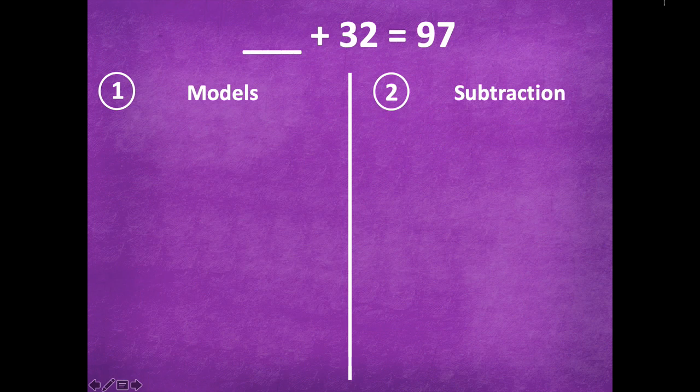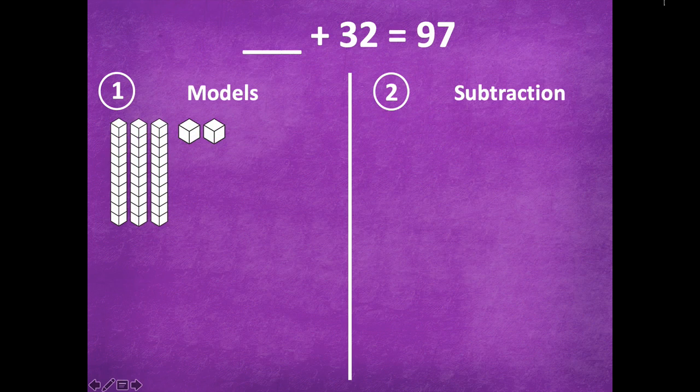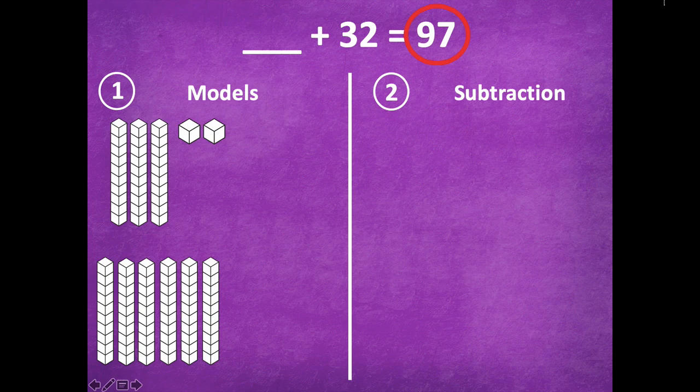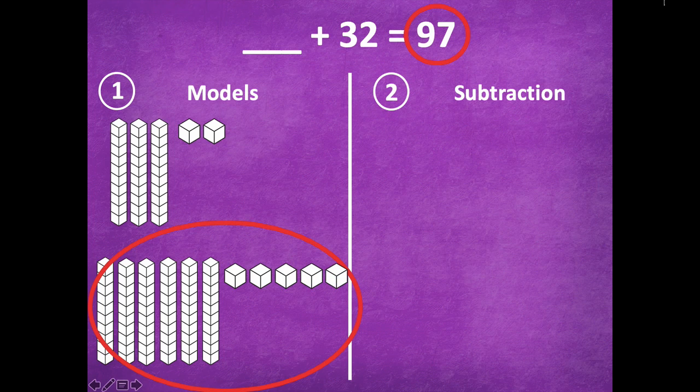All right friends, make sure to pause if you need more time. Otherwise here we go. So with the models method, I'm going to start with the addend that I do know, which is 32, and I'm going to count on until I get to 97. So we're at 32. Let's add some tens: 42, 52, 62, 72, 82, 92, 102. Oh wait a minute, too far again, take that one away. So we're at 92. So 93, 94, 95, 96, 97. So how much do I have here in my oval now friends?